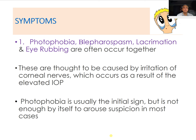Photophobia, blepharospasm, lacrimation, and eye rubbing in these patients are thought to be caused by irritation of corneal nerves resulting from raised intraocular pressure. Photophobia is usually the initial sign, but is not enough by itself to arouse suspicion in most cases. When intraocular pressure rises, the pressure in the anterior chamber exceeds the capacity of the endothelial pump, causing fluid to enter the cornea and producing corneal edema, which explains the photophobia.